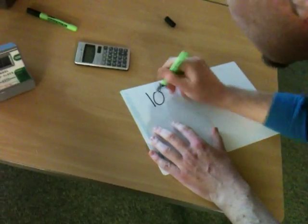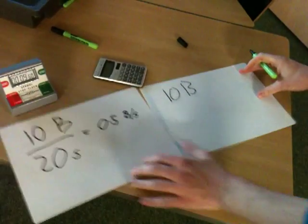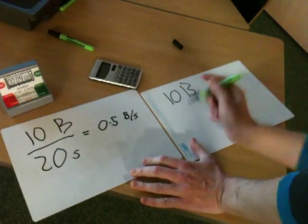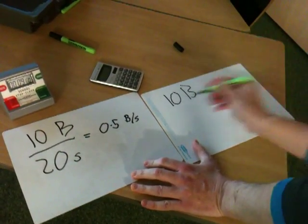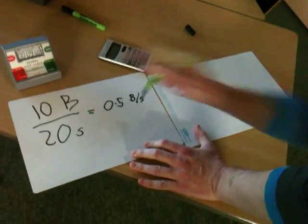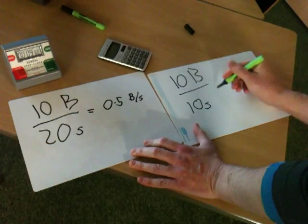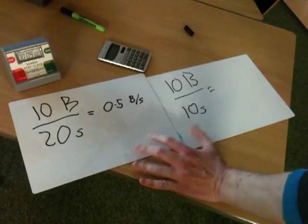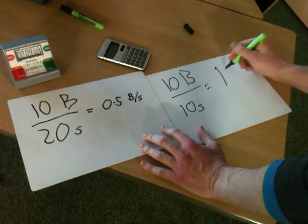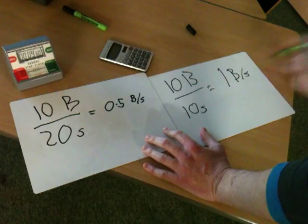Data. This time we transferred ten balls again, so we've done ten balls both times, but the difference is this time it was quicker. We're going to round that up — 9.6 seconds — so this time we transferred one ball per second.